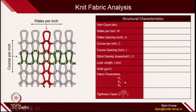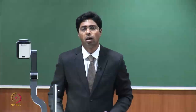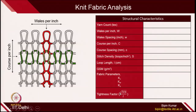Some key fabric parameters are KW, KC, and KS, which will be covered in the geometrical model around week 3 or 4. The tightness factor is defined as square root of tex divided by L (loop length). This factor indicates the fractional coverage of yarn inside the fabric structure. If this factor is high, the fabric is very tight, meaning the porosity or permeability of the fabric will be hindered. Tightness factor is also useful when comparing different fabric structures.